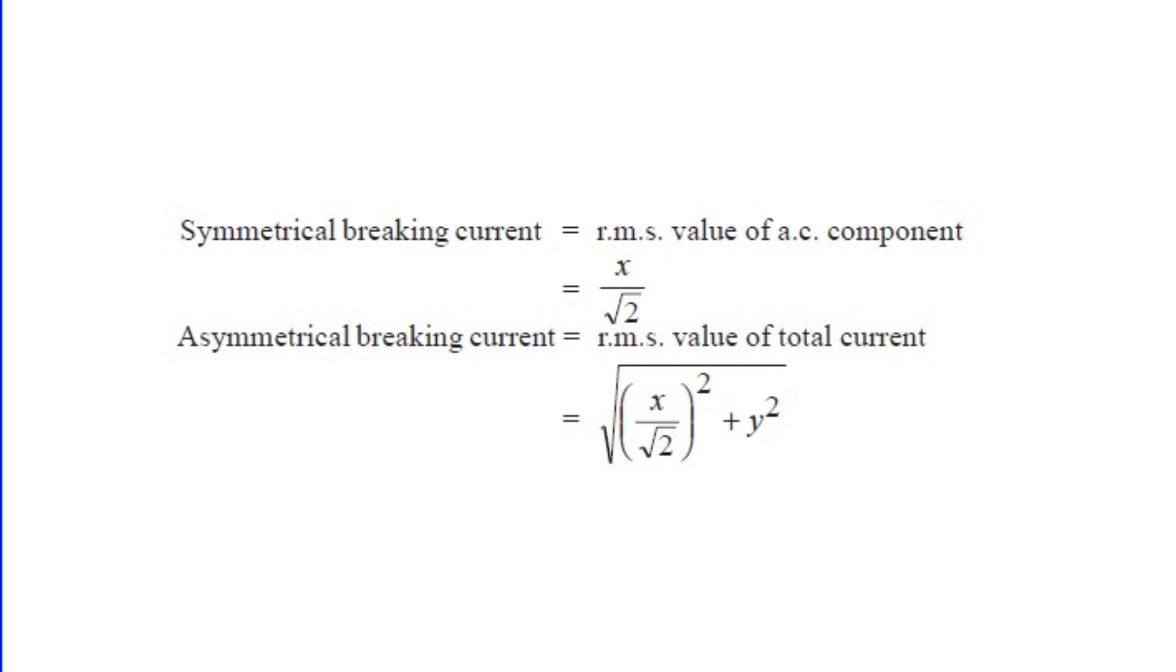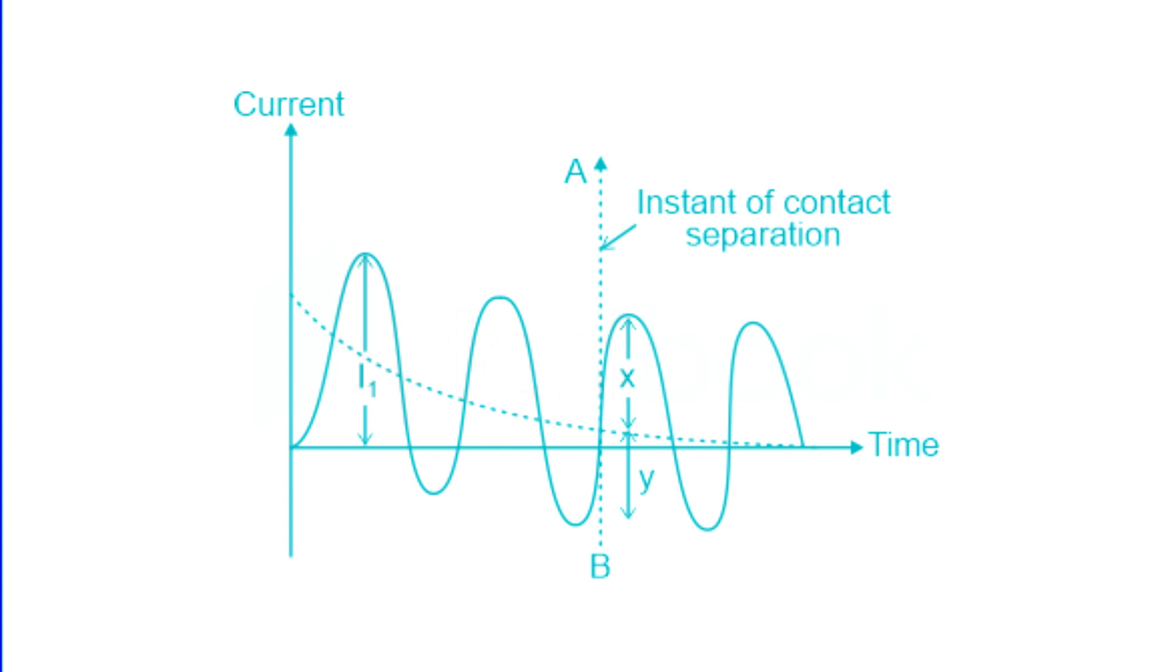That is root over x by root 2 whole square plus y square. It is important to note that the breaking current of a circuit breaker is always given in RMS.